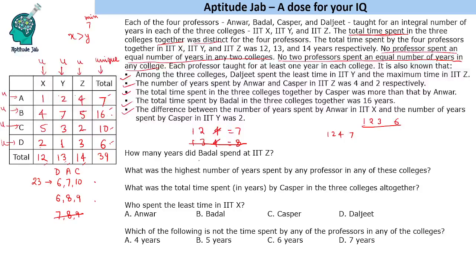Now answering the questions. How many years did Badal spend at IIT-Z? Badal spent 5 years at IIT-Z. What was the highest number of years spent by any professor in any college? The highest is 7. What was the total time spent by Casper in the three colleges altogether? Casper spent a total of 10 years. Who spent the least time in IIT-X? The least time in IIT-X was spent by Anwar. Which of the following is not the time spent by any professor in any college — 4, 5, 6, or 7? Four is present, five is present, seven is present, but six was not spent by anyone. So the answer is 6.